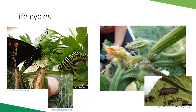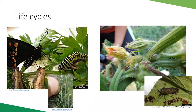A black swallowtail butterfly caterpillar looks so different from the adult that you'd have a hard time convincing someone it would turn into a butterfly. On the other hand, squash bug nymphs have different coloring and body shape from adults, but it's not a big stretch to see how they'll become the adult squash bug. Complete metamorphosis can be confusing when dealing with identification.